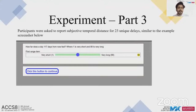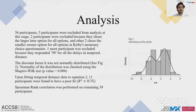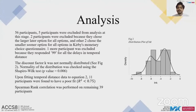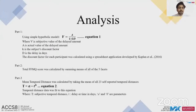Normality was checked using the Shapiro-Wilk test. Given that discount factor k was not normally distributed, we performed Spearman rank correlation. After fitting the temporal distance data to a power equation, 11 participants were found to have a poor fit; Spearman rank correlation was performed on the remaining 39 participants. Discount factor k for each participant was calculated using the method described by Kirby et al. (1999); total FFMQ score was also calculated.